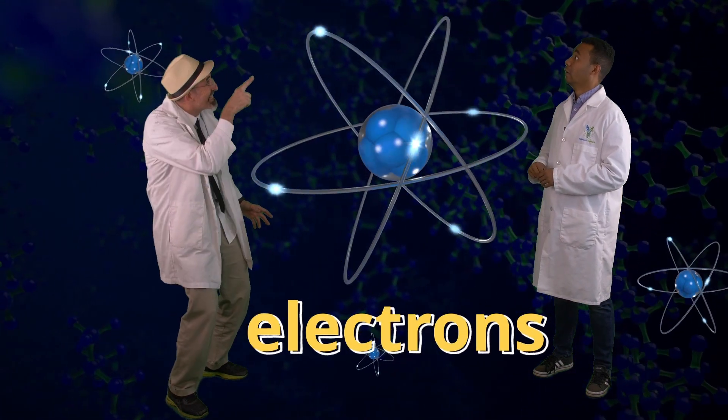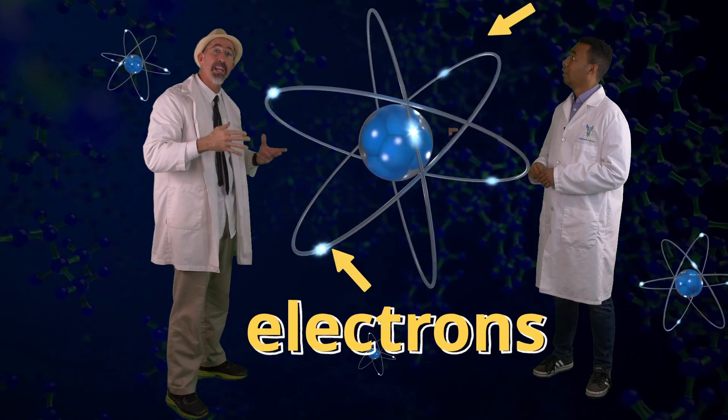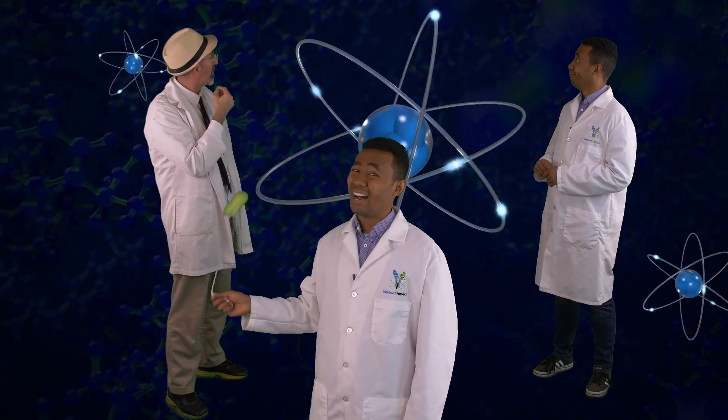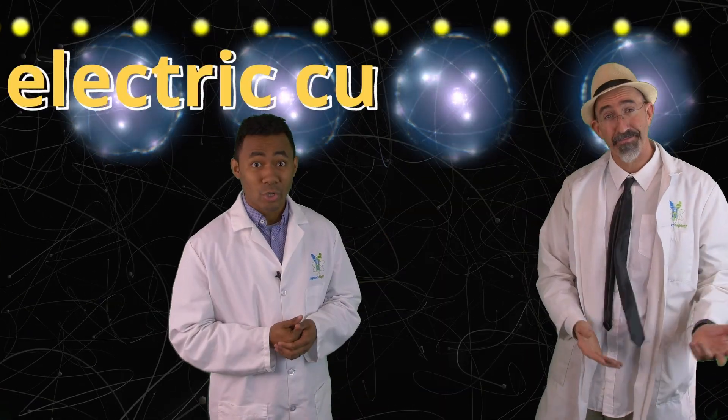That's right. And it's these electrons that create the electricity. And these electrons are not tied to the nucleus of these atoms. And this allows them to move from one atom to another. And when the electrons move from atom to atom, it creates an electric current.